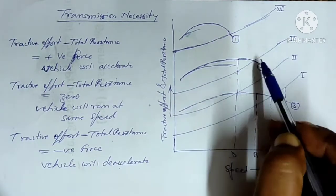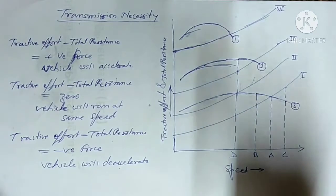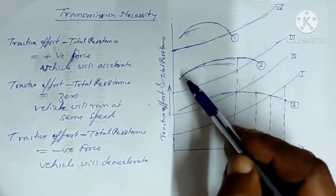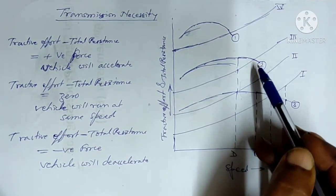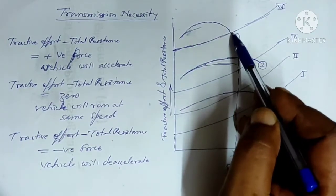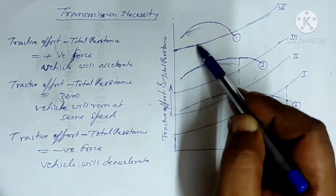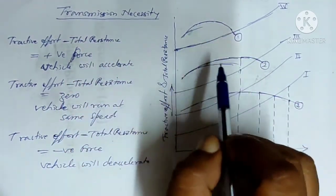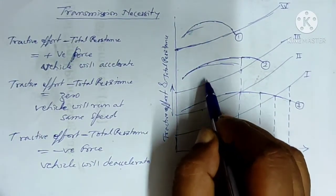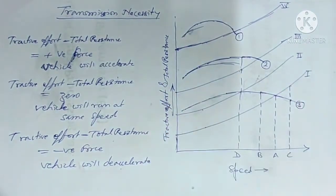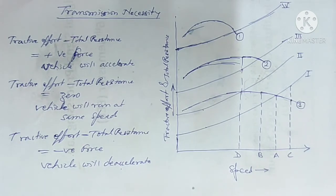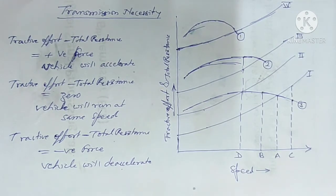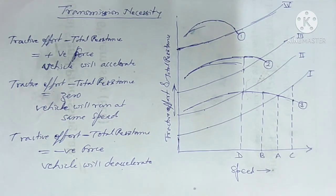When the tractive effort and resistance become equal, the vehicle will continuously move at that speed. If the resistance is increased further such that the second gear can also not provide sufficient tractive effort, then we have to move to first gear, where there is a point where tractive effort matches the resistance. This is the transmission necessity: we need different gears because depending on the resistance, we need different levels of tractive effort, which can only be changed by changing gear — reducing speed so that it matches the required tractive effort.